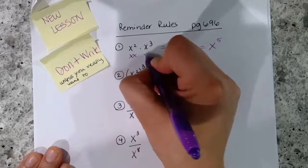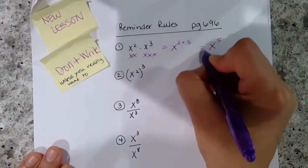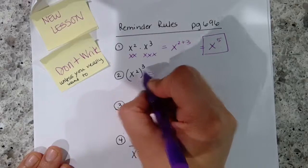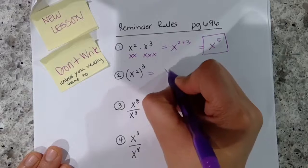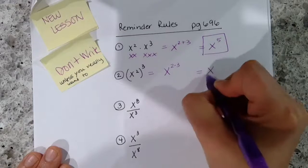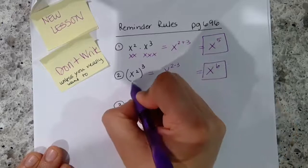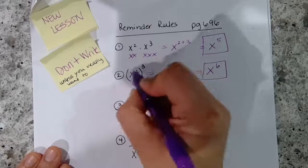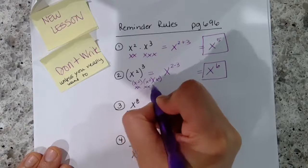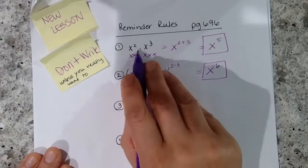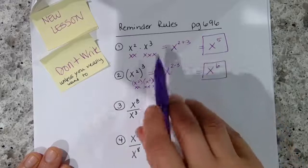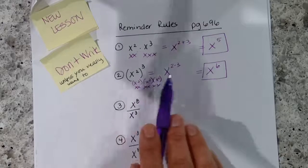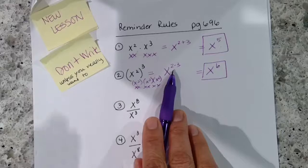The product rule says you multiply — that is, add — the exponents. Why? Because you really have two x's here and three x's here, so this gives you x to the fifth. This is the power of a power rule, and your answer is x to the sixth. The reason is you multiply the exponents: x squared three times means x·x·x·x·x·x — six of them. With a multiplication problem you add the exponents; with a power of a power you multiply the exponents.